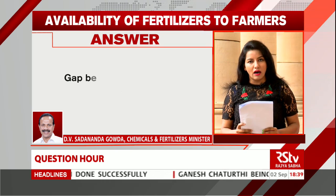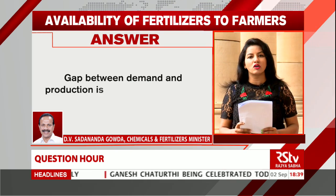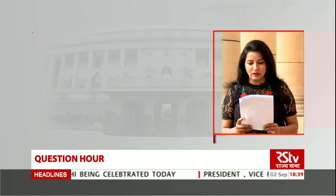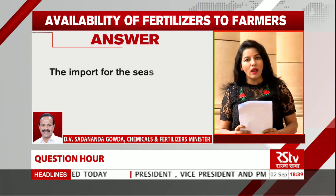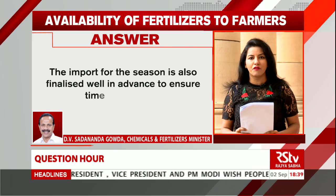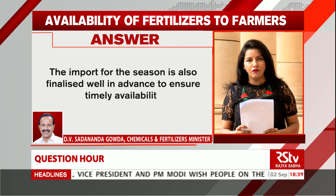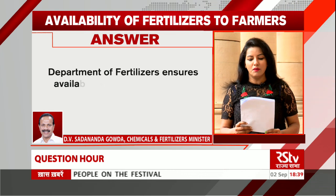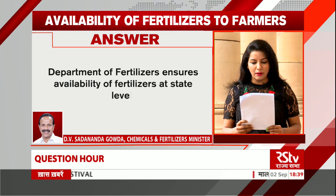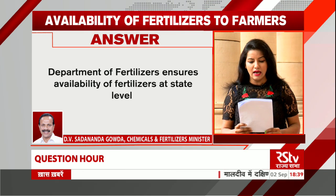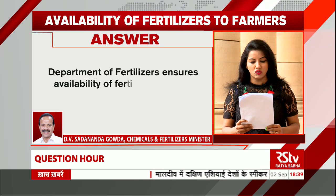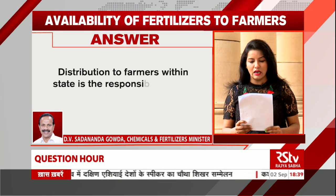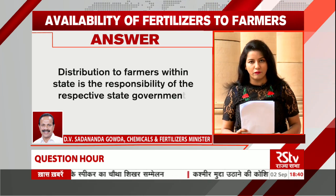The gap between demand and production is met through imports, which are finalized well in advance to ensure timely availability. Thus, with all these steps, the Department of Fertilizers ensures availability at the state level, while the distribution to farmers within the state is the responsibility of the respective state government.